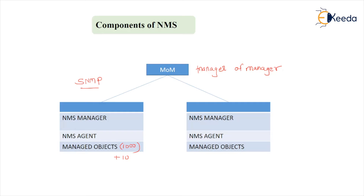NMS, NOC, and MOM are the essential network element devices to control, secure, and monitor the network, and to manage the database MDB — the real database. The agent can also have a database, but the agent's database is known as MIB — Management Information Base — which contains only the local information of the electronic devices.